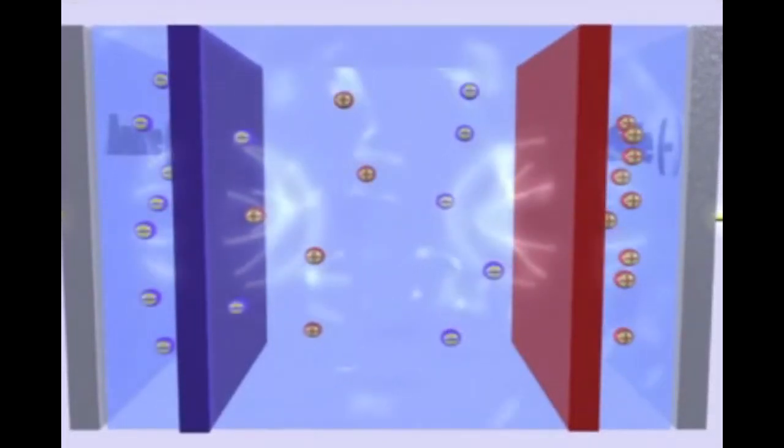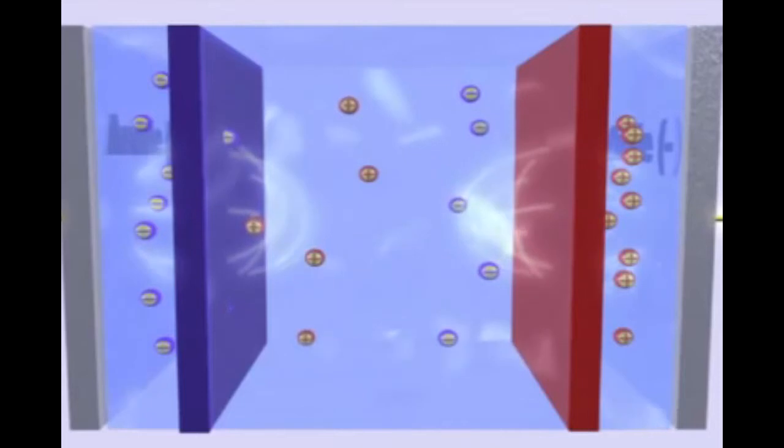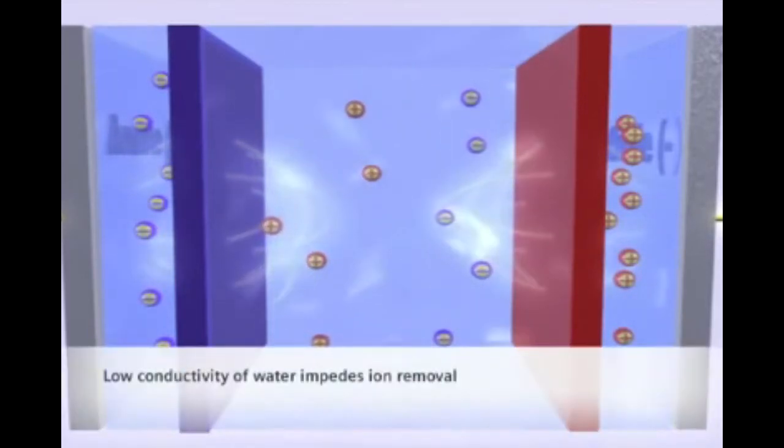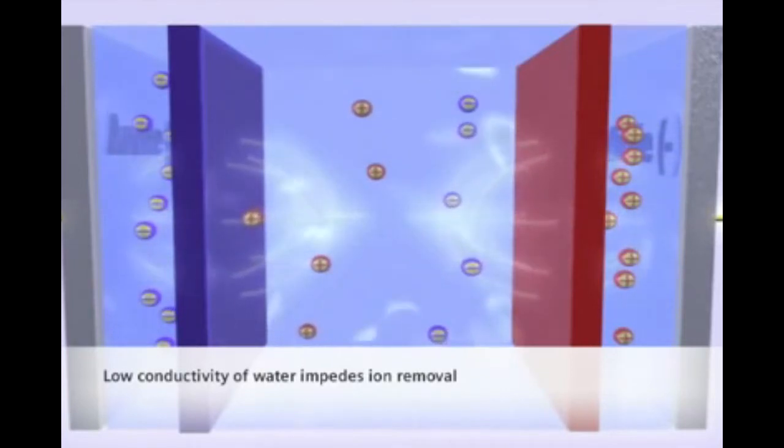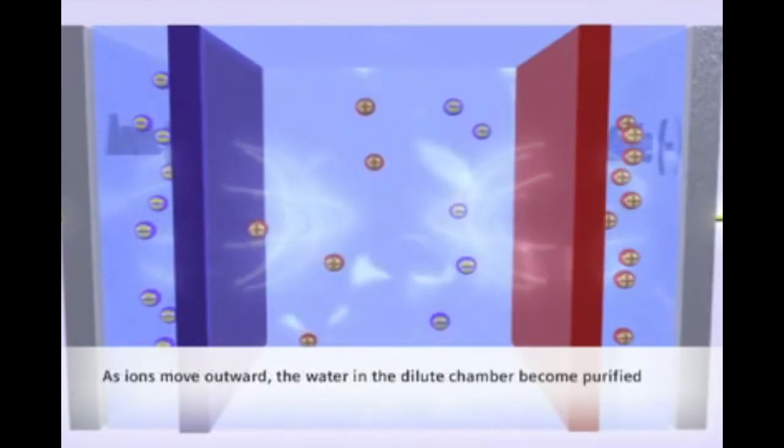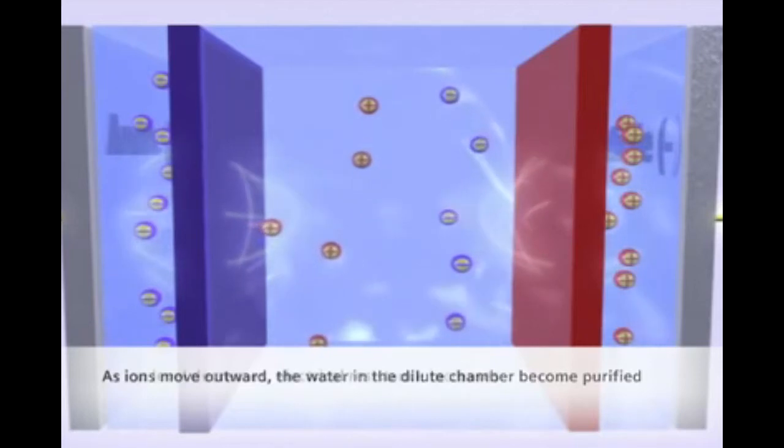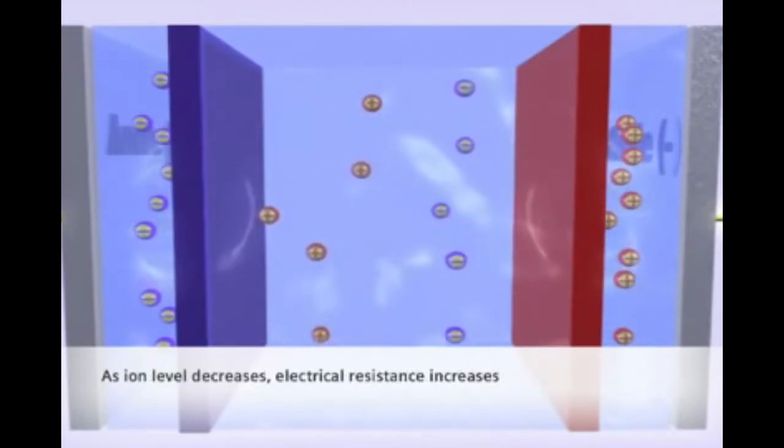This process is limited, however, by the slow speed at which ions move through water. In effect, the low conductivity of water impedes ion removal. In other words, as the product compartment water becomes more and more pure, the electrical resistance of this water increases and counters the effect of the electrical field.